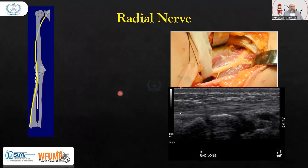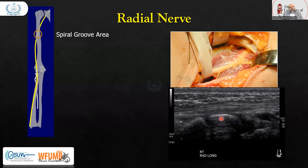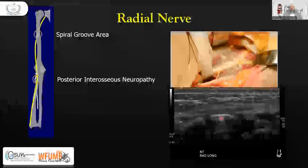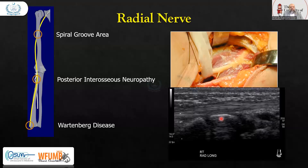After the ulnar nerve, we have the radial nerve. The radial nerve gives out muscular branches to supply the long head, medial head, and lateral head of the triceps brachii muscle. It supplies the brachialis, brachioradialis, and extensor carpi radialis longus muscles. In the spiral groove, posterior interosseous neuropathy can occur, and Wartenberg disease can also occur in this area.